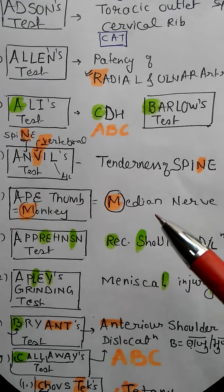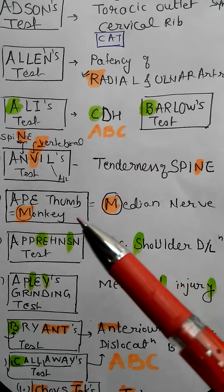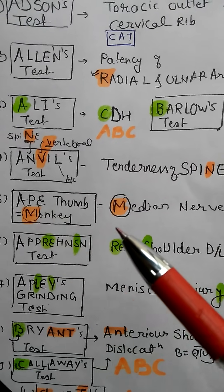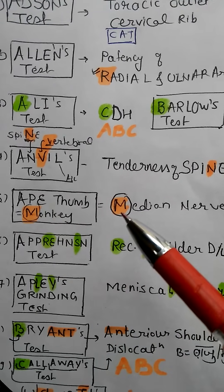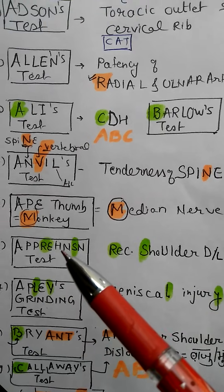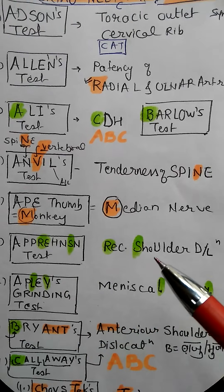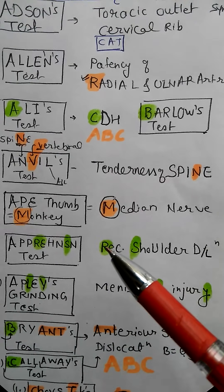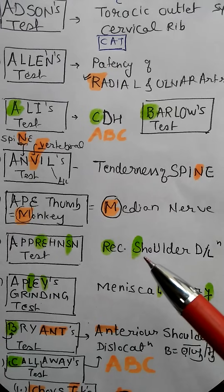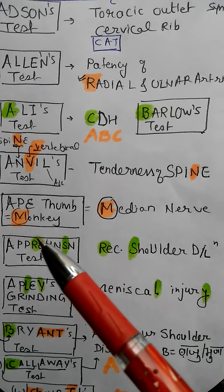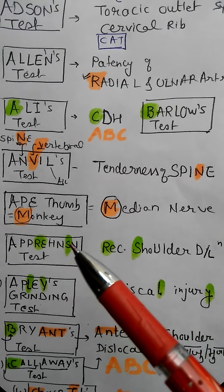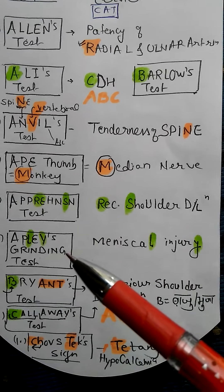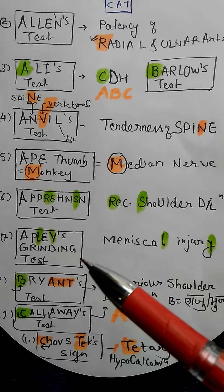Everybody knows ape thumb — median nerve. Ape means monkey, M for median. Apprehension test is for shoulder and for recurrent shoulder dislocation — RE for recurrent and SH for shoulder.